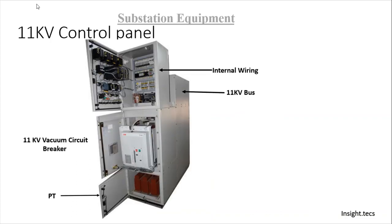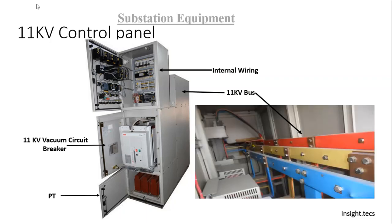Now let us open this panel and see what is inside. You can see the internal wiring in the top section. In the middle section, we have the vacuum circuit breaker. This breaker can be racked in and racked out as per our requirement. At the bottom section, there is the PT. Also, on the back side of this panel, there is an 11 kV bus — this is how the 11 kV copper bus looks internally. For 11 kV, the copper bus is inside the control room, whereas for higher voltage levels — 66 kV and beyond — the buses are situated outside in the switch yard.